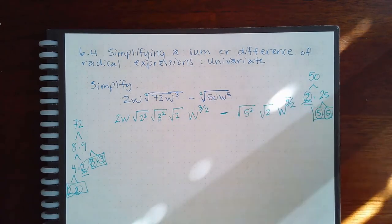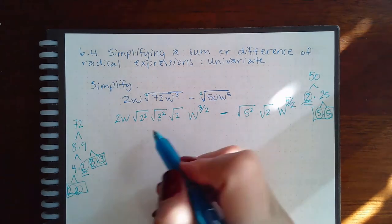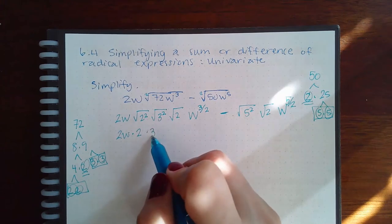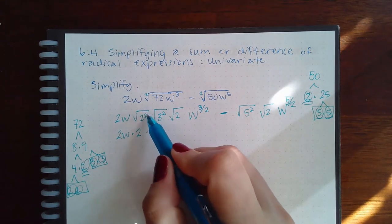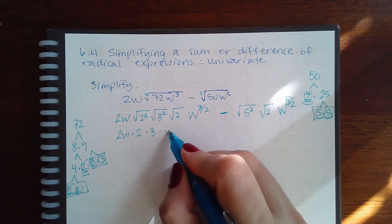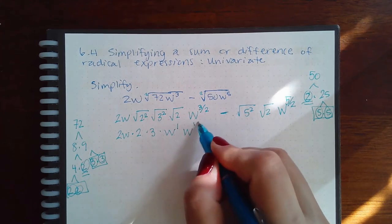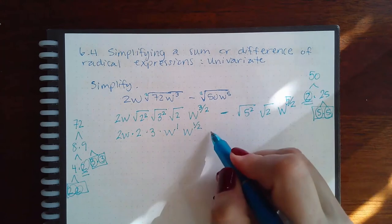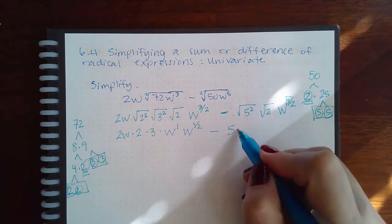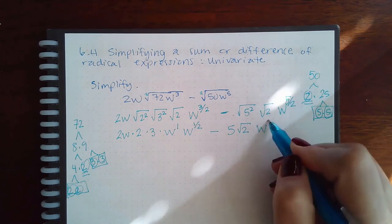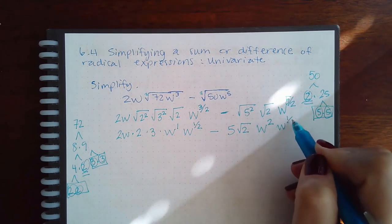So then let's see what we end up having. We have 2w times a 2 times a 3, because these undo each other, right? And then we have w, 2 goes into 3 one time but it'll still have one left over here. Those will cancel. I'll get 5 here. I'll have a square root of 2, and then w, 2 goes into 5 two times with 1 left over.